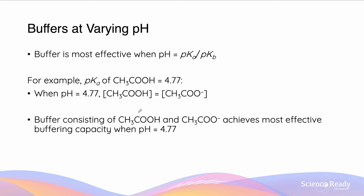Let's use acetic acid as an example. The pKa of acetic acid, CH3COOH, is 4.77. So this means that at a pH of 4.77, the concentration of acetic acid is equivalent to the concentration of its conjugate base, which is the acetate ion. So the buffer consisting of acetic acid and the acetate ion is going to be most effective when the pH equals 4.77.